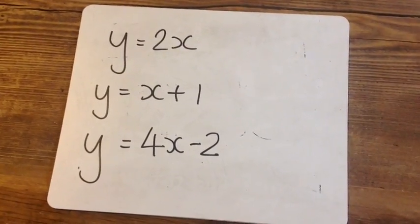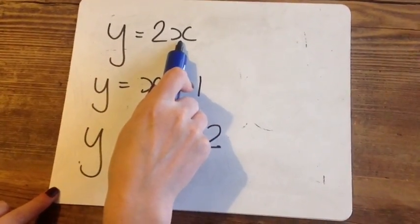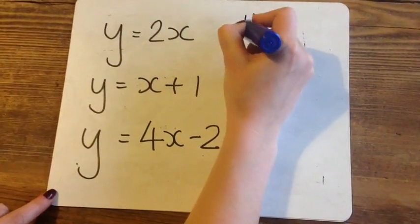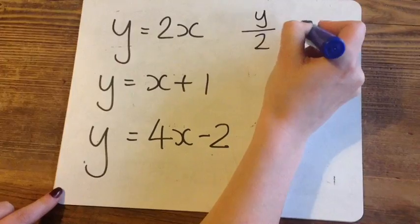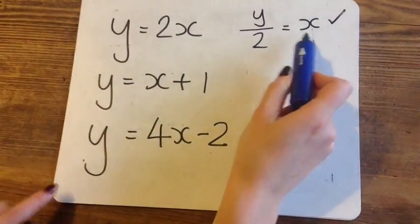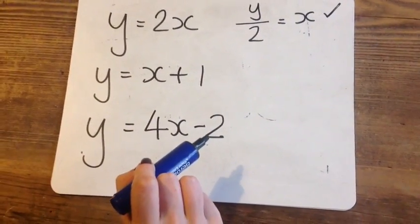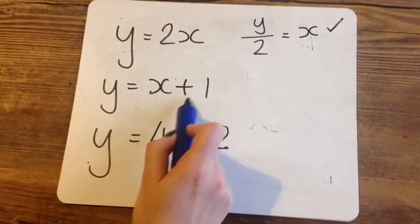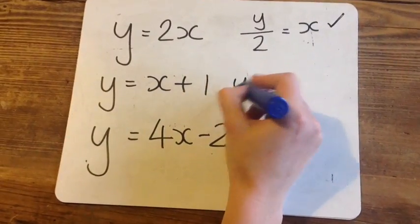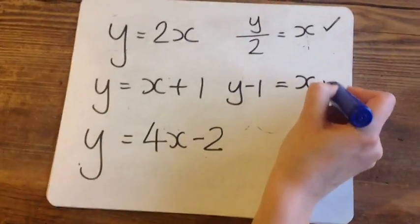Let's go through some answers. Currently, this 2 is timesing the X. So when I move it over, it's going to become a divide. Done. You could write that as X equals Y divided by 2. It doesn't matter. This 1 is currently adding. So when I move it over, it's going to become a takeaway. Done.